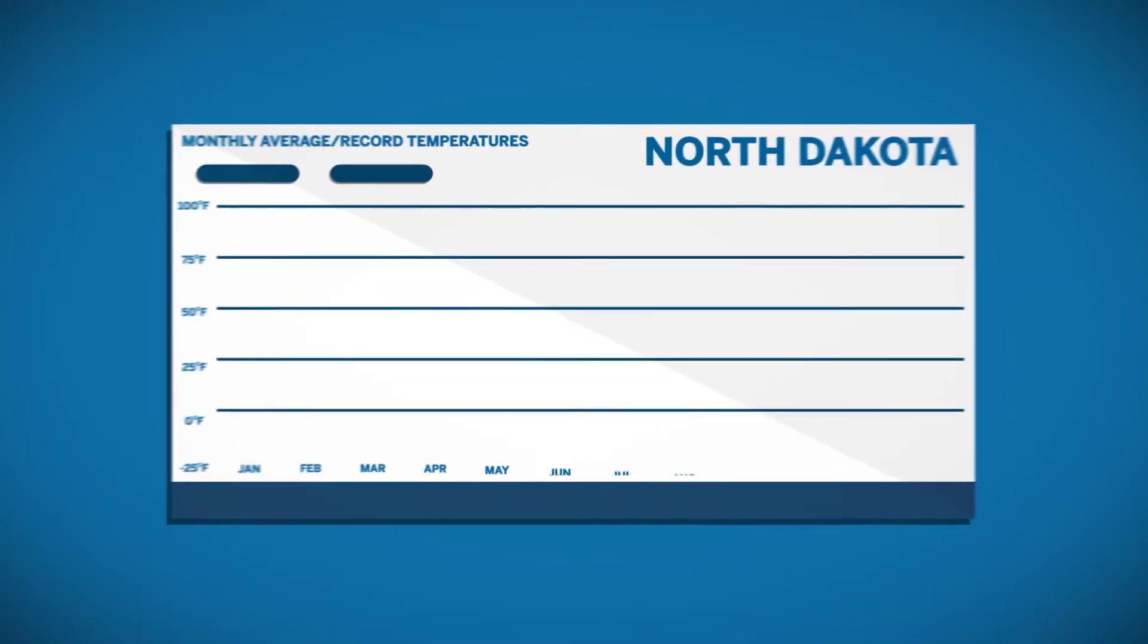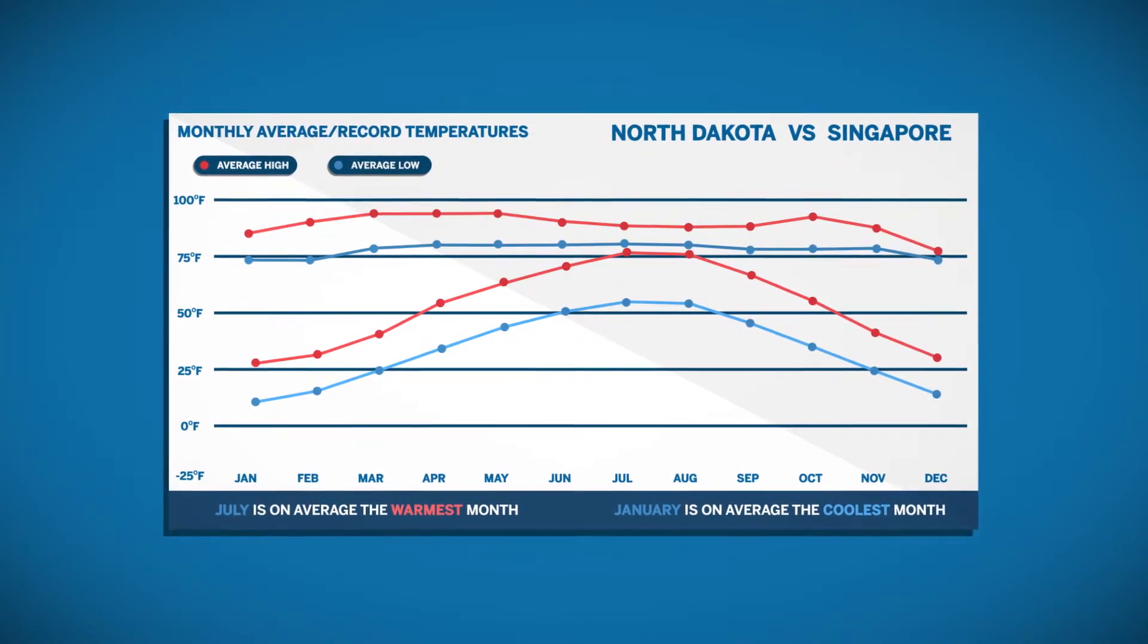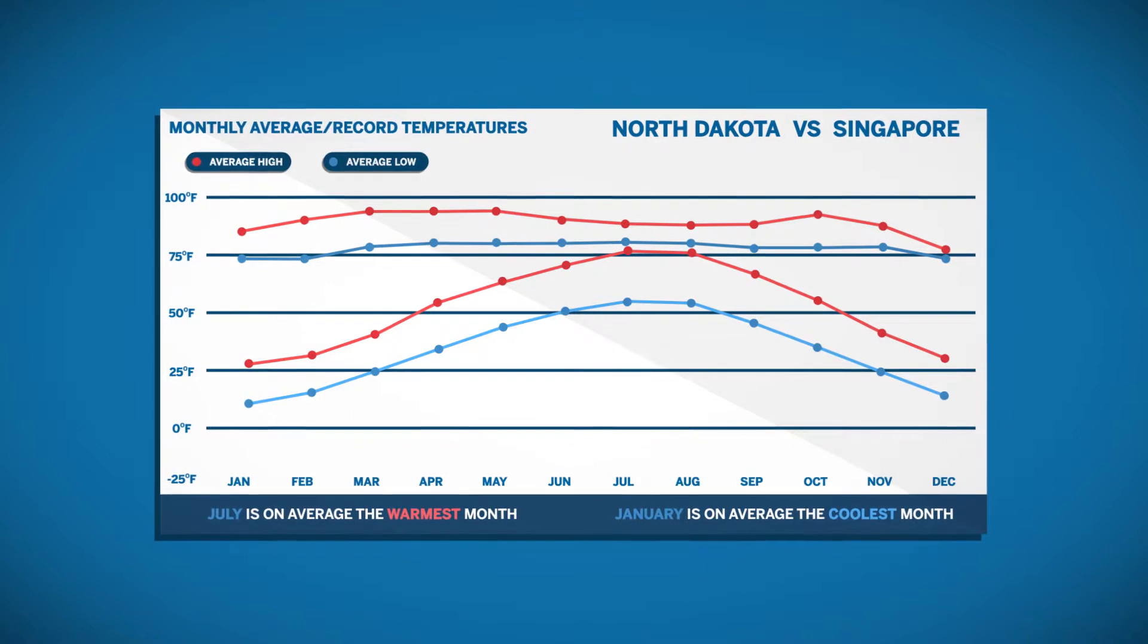In Bismarck, North Dakota, those same temperature swings can be as much as 80 degrees. You can see the temperature volatility is much greater in Bismarck than in Singapore.